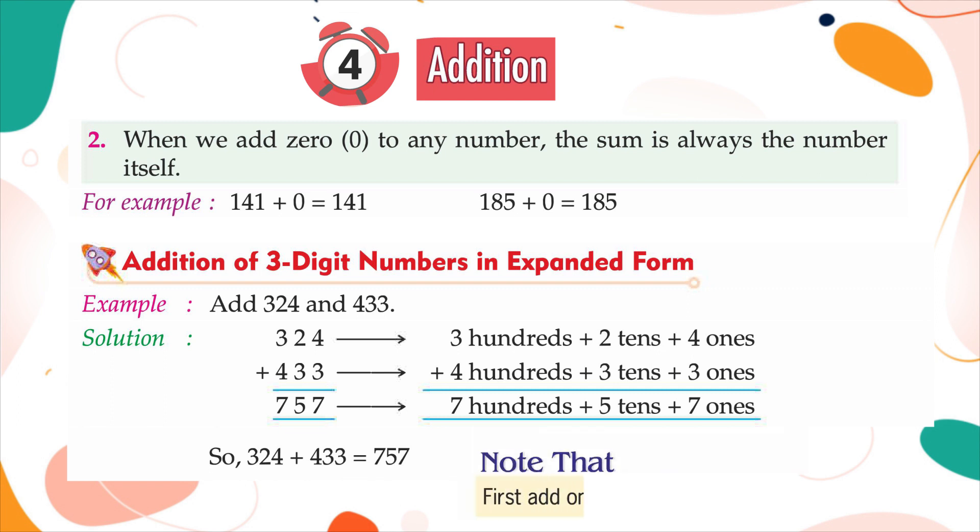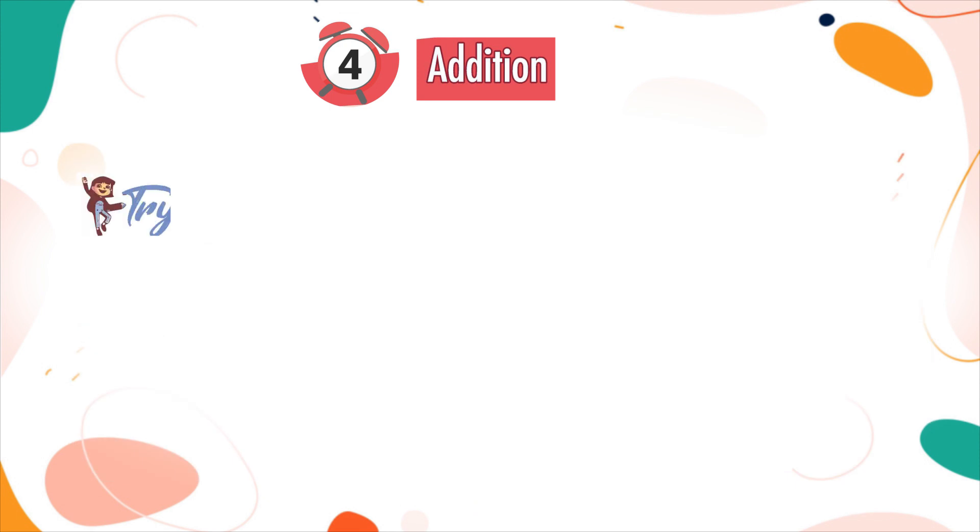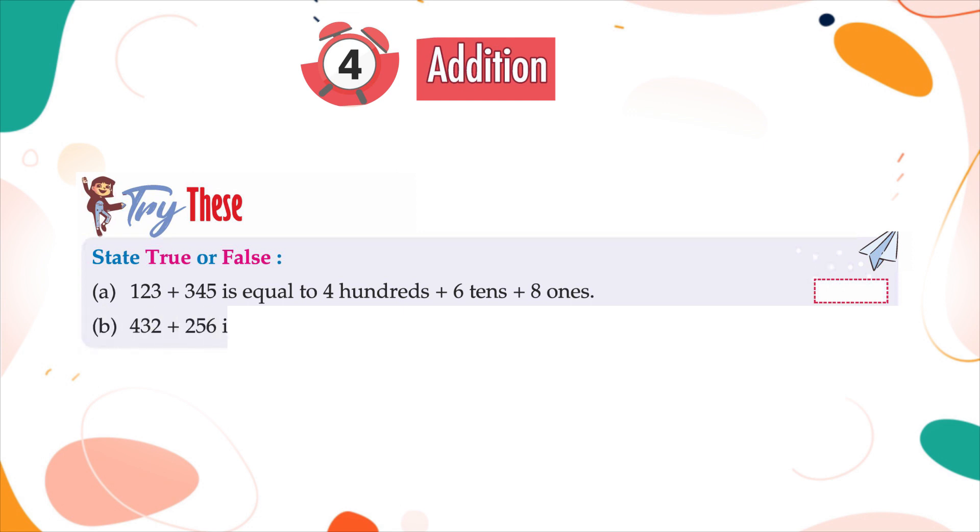Note that first add ones, then tens and then hundreds. Try these. State true or false: A. 123 plus 345 is equal to 4 hundreds plus 6 tens plus 8 ones. B. 432 plus 256 is equal to 6 hundreds plus 7 tens plus 7 ones.